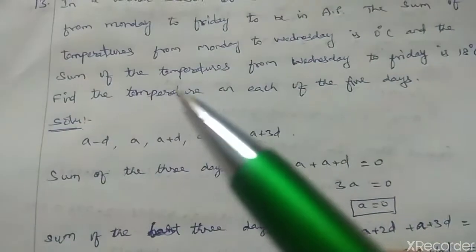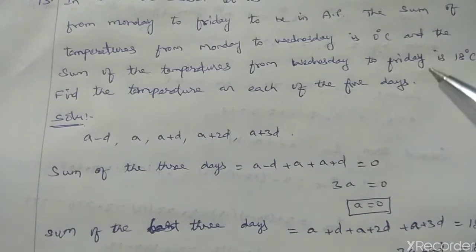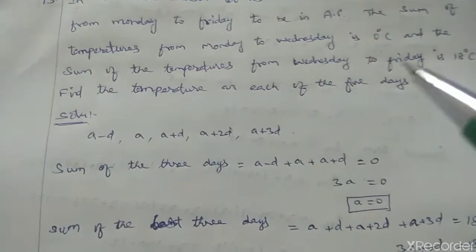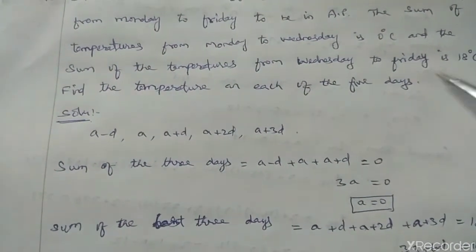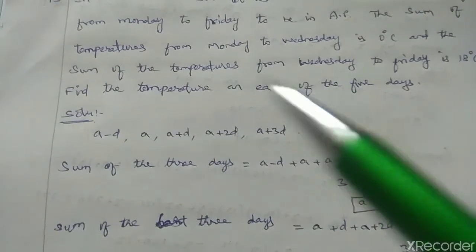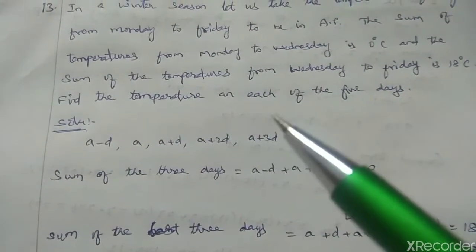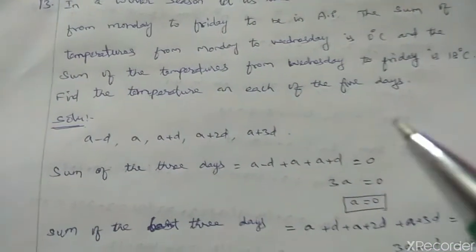And the sum of the temperatures from Wednesday to Friday is 18 degrees C. Here we have 18 degrees C. Find the temperature on each of the five days.